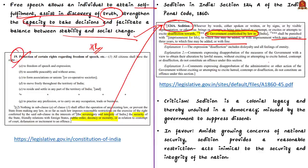They have to live without their passport and must produce themselves in court as and when required. The relevance of this section in a democratic country like ours is a subject of continuous debate, because sedition is a colonial legacy and thereby unsuited in a democratic country. There is an apprehension that this provision might be misused by the government to suppress dissent — exactly the context in which this news article has been written.